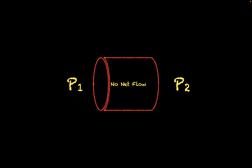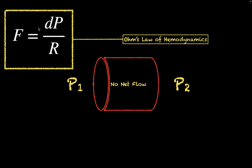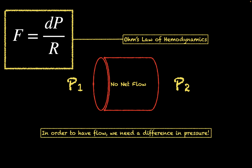This brings up a very important point described by Ohm's law of hemodynamics, which states that flow is directly proportional to the difference in pressure. You need a difference in pressure in order to have flow. Specifically, flow equals the difference in pressure divided by the resistance of the tube.